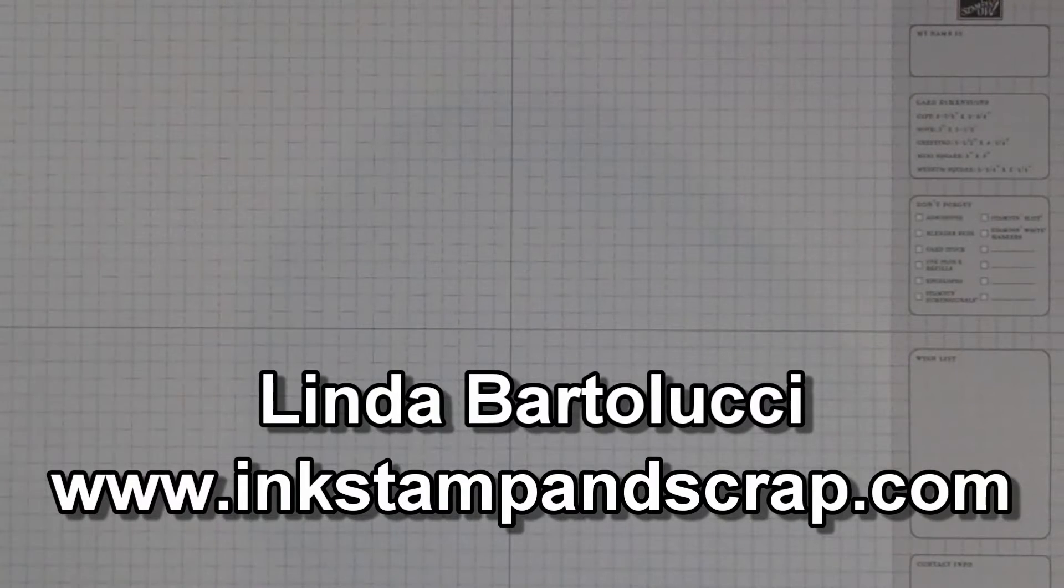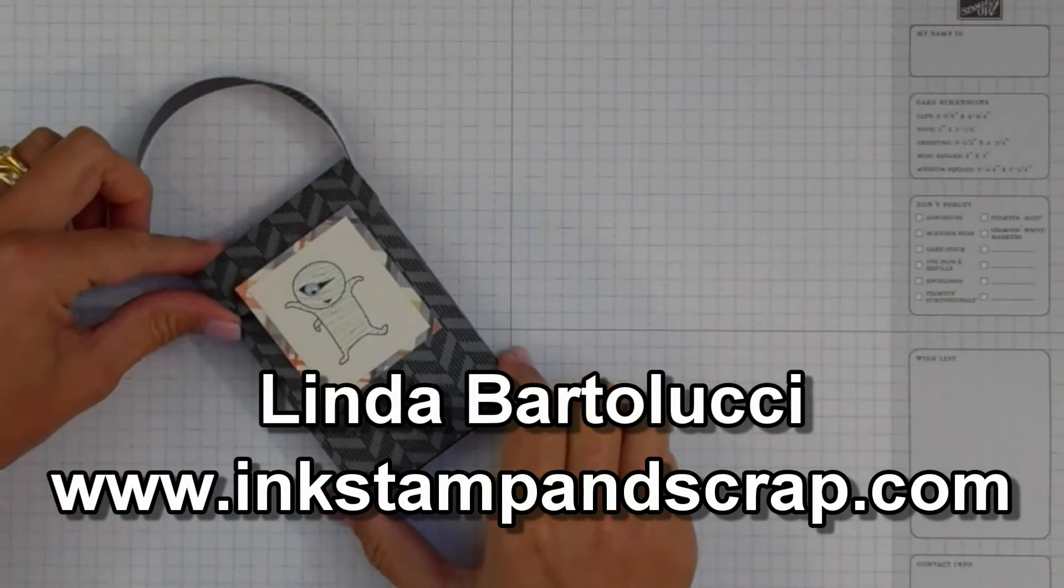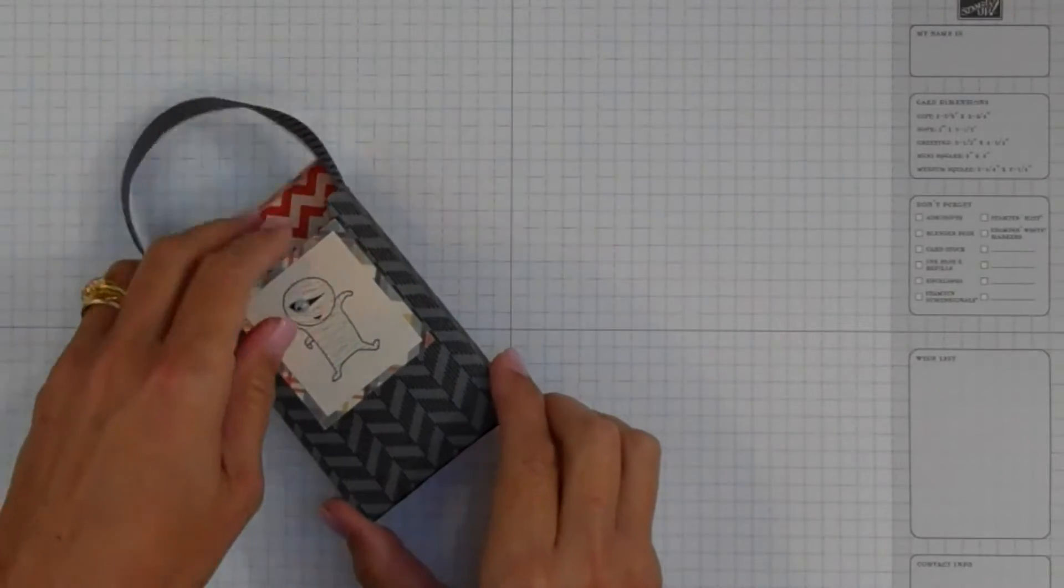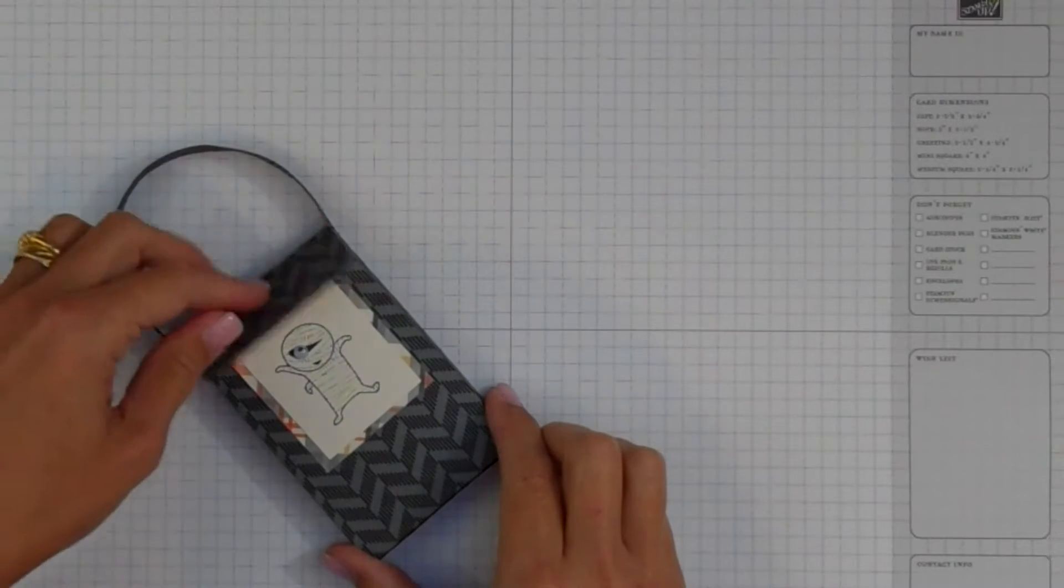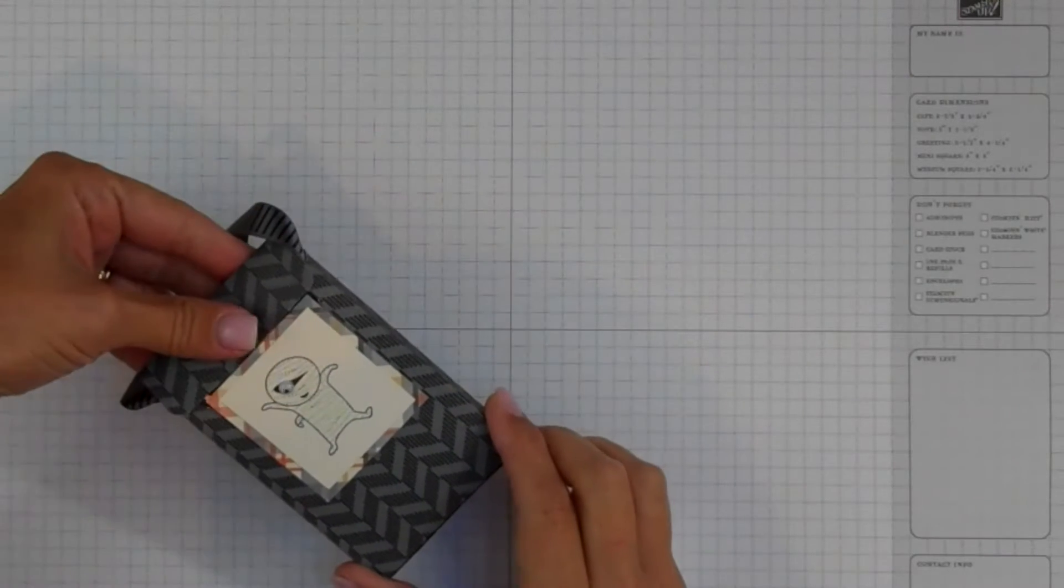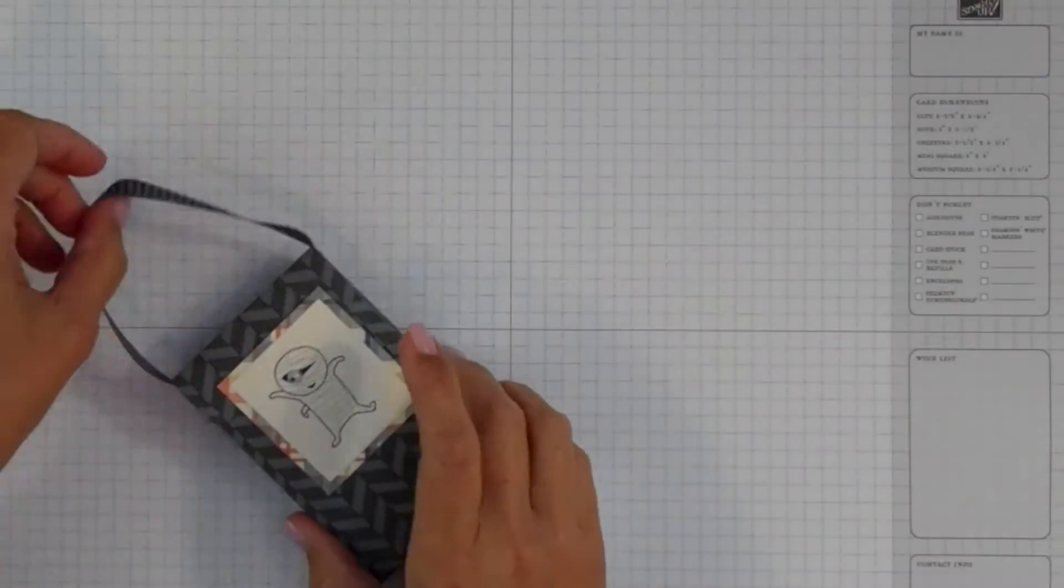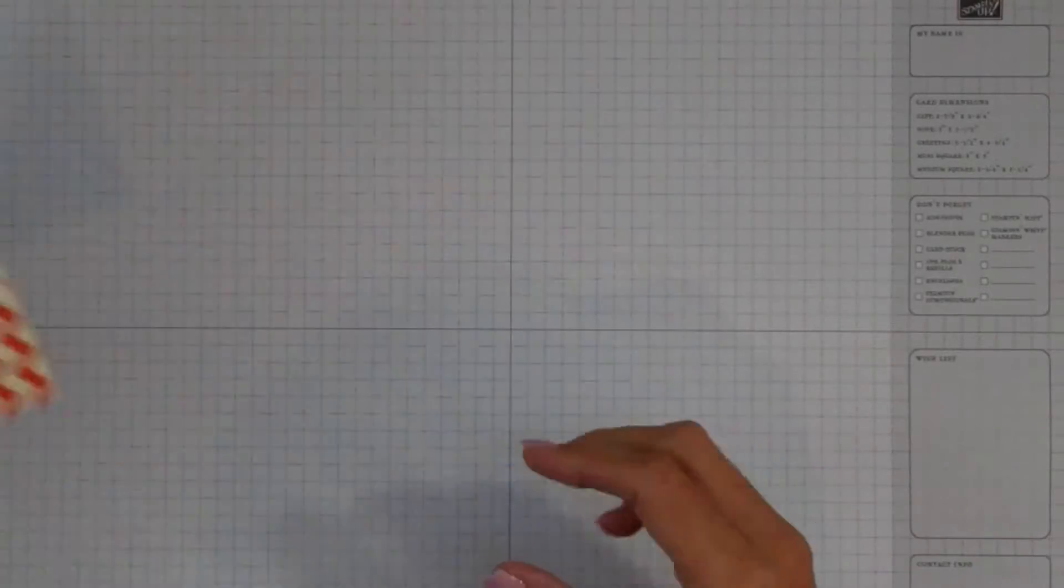Hi and thanks for watching. This is Linda Bartolucci with Ink Stamp and Scrap dot com. A while ago I posted this sample on my blog and a lot of people have asked exactly how to make it. I posted the pattern but today I thought I'd show you how you can make this cute little gum holder. A little pack of gum slides right inside and then you just tuck the tab right under whatever you decide to stamp on the front and you're ready to go. So let me show you how I put this together.